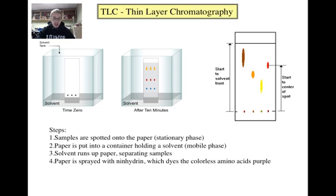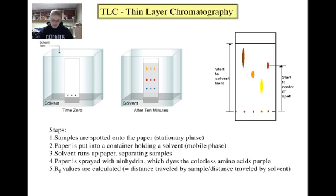Once the solvent has reached the top of the paper, the paper is taken out of the chamber and sprayed with ninhydrin, a chemical that makes the colorless amino acids appear purple. RF values are then calculated for each amino acid by dividing the distance traveled by the sample by the distance traveled by the solvent. You can then compare the RF values of the unknowns to RF values of known amino acids run at the same time to determine the identity of the unknown amino acids in the sample.